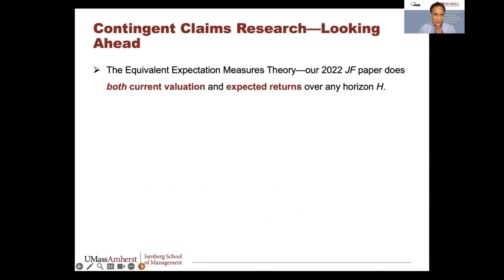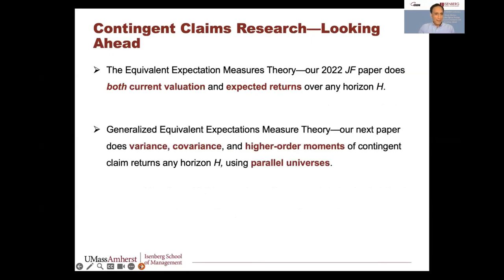Looking ahead: the 2022 Journal of Finance paper does both current valuation and expected returns over a finite horizon H. I'll present that because it is needed to present the extensions in higher-order moments. Then we generalize that Equivalent Expectation Measure theory in the next paper, where we do variance, covariance, and higher-order moments of contingent claim returns over a finite horizon.